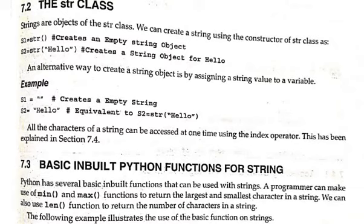An alternative way to create a string is by assigning a string value to a variable. S1 equals double quotations open and close creates an empty string. You can create strings without using the str class.